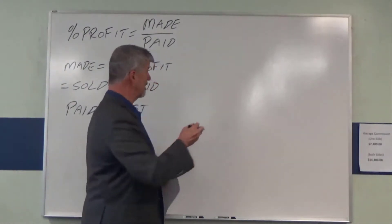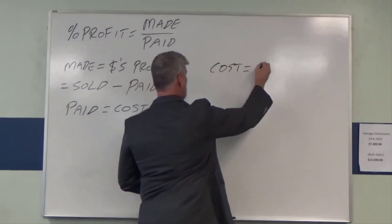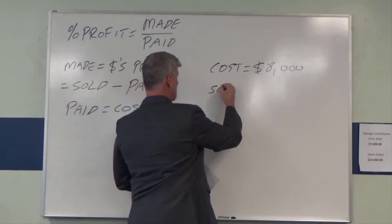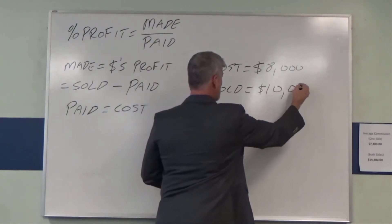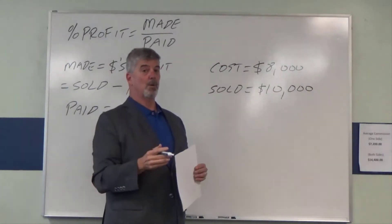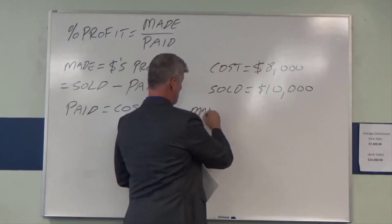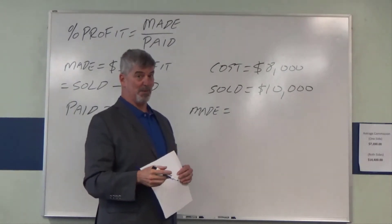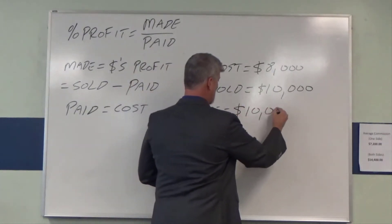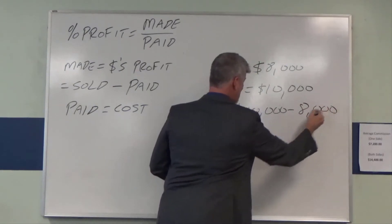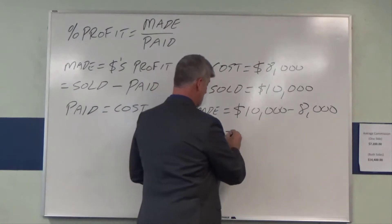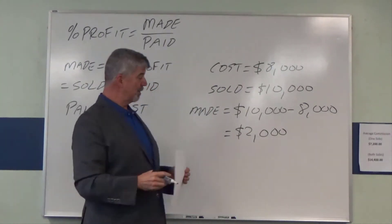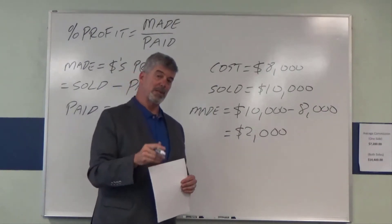So let's write down our information. Cost or paid was $8,000. We sold it for $10,000. Made, or dollar's profit — what you sold it for minus what you paid for. So our dollar's profit is $2,000. I'd do that every single day of my life if I could. But the question is, what is the percentage profit? Remember that your formula is made over paid.